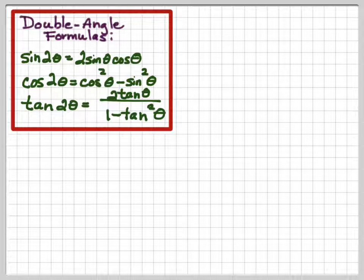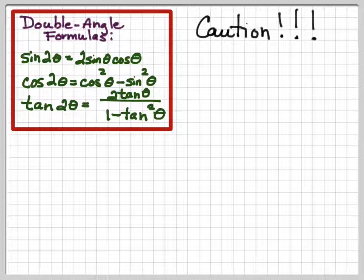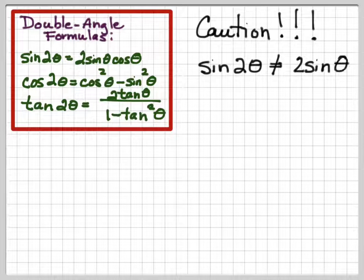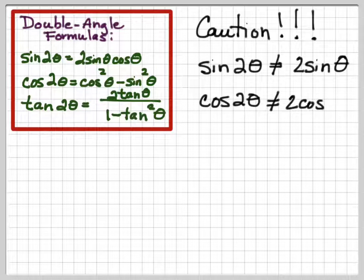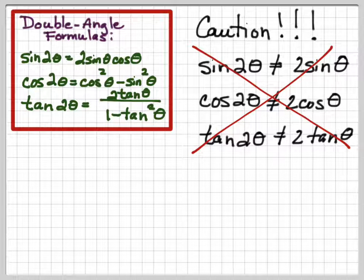We're going to come back for some more cosine 2θ forms in a little while. I want to caution you: these are identities, and they do not work the same way as normal algebraic equations. Sine of 2θ is not equal to 2 sine θ, cosine 2θ is not equal to 2 cosine θ, and tangent 2θ is not equal to 2 tangent θ. Don't fall into that ugly viper pit.